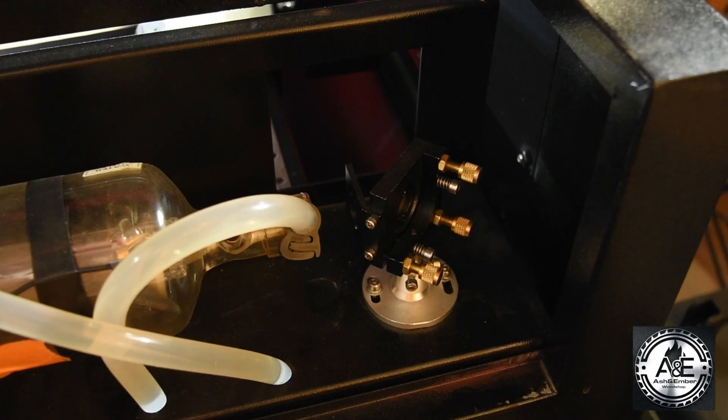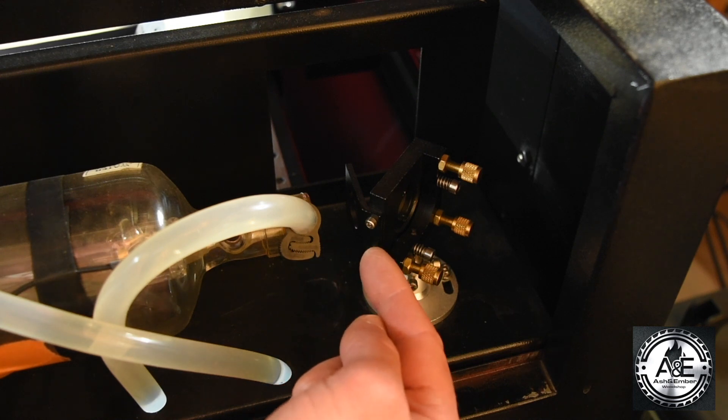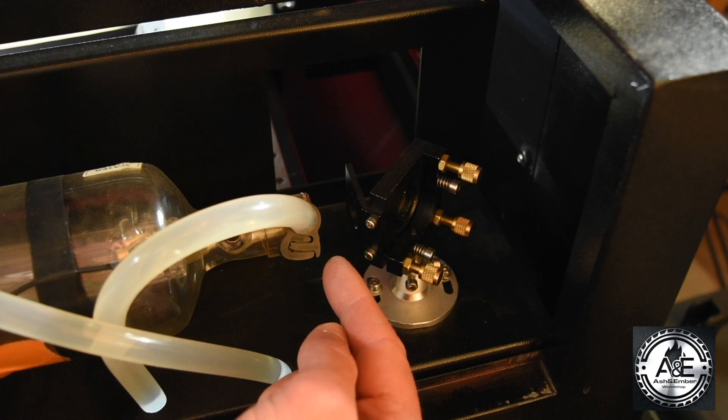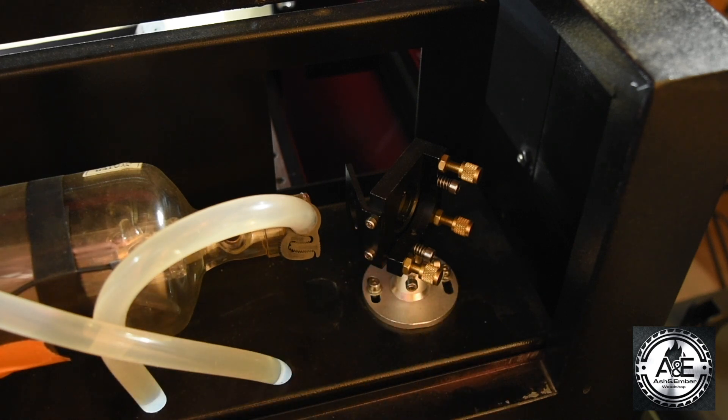So when you initially put your laser tube in, you're going to want to make sure that the front of the laser tube is not right against the bracket of mirror one. You're going to want to have at least a finger length in there so you can get something in there to clean that little transparent lens that's on your laser tube.